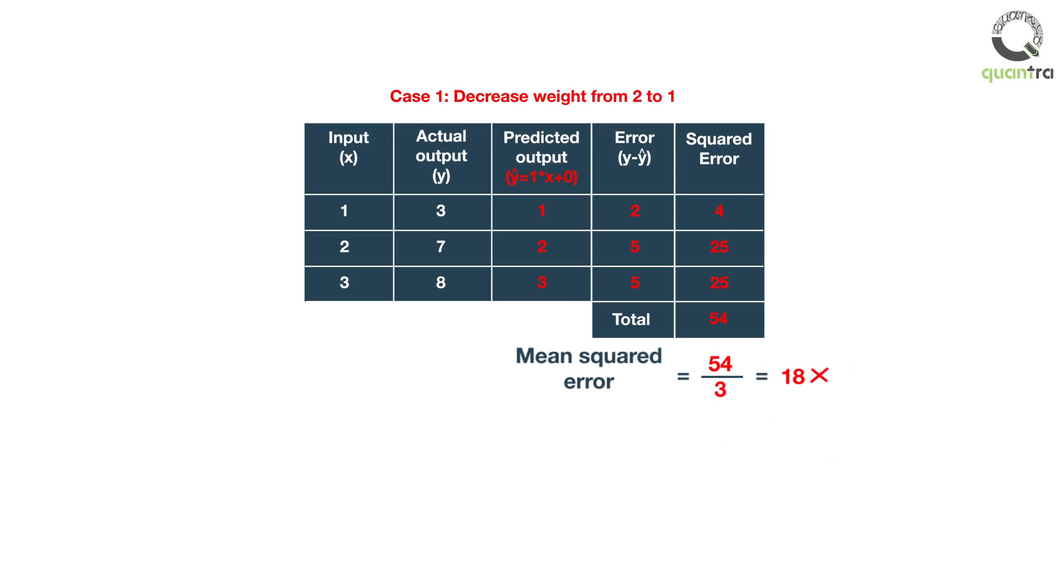Therefore, we increase the weight from 2 to 3, which causes the mean squared error to reduce from 4.66 to 0.66. This is a very simple example to understand how weights might be changed in a single neuron.